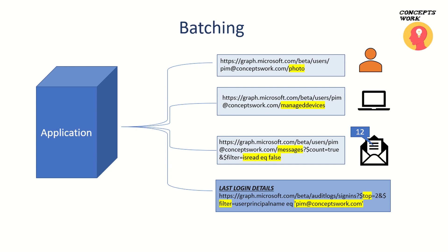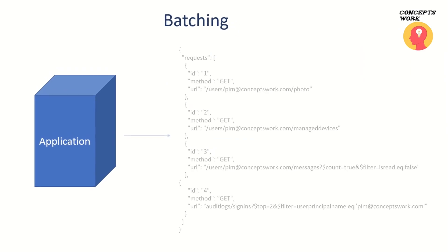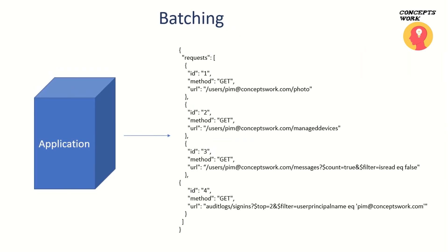In this kind of scenario, your application will send only one request with the appropriate request body structure — as shown on screen — and you will get the appropriate results. But this requires your application to have the appropriate permissions so that it can actually perform a specific HTTP method for a specific endpoint of the API. For example, the first segment where I'm querying the photo requires user.read permission.